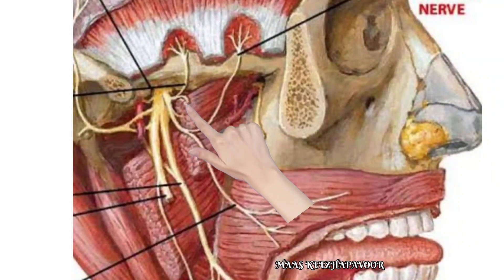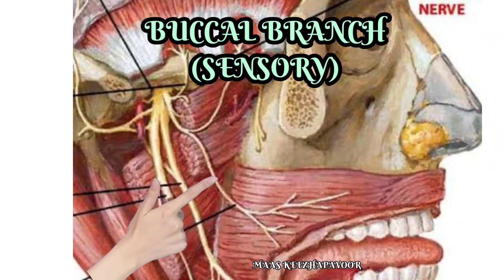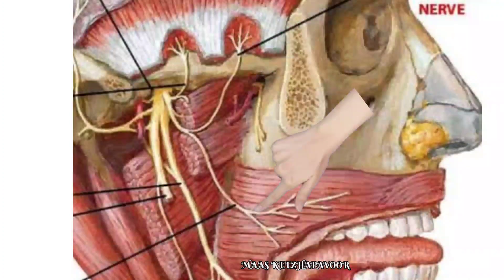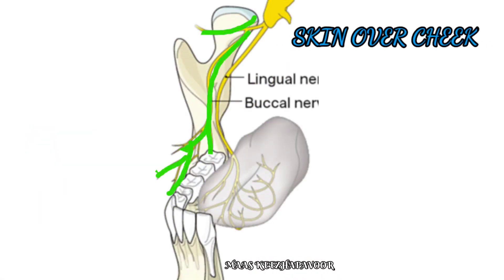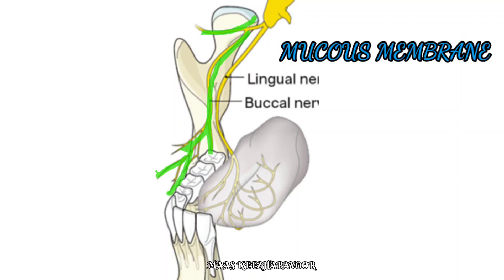The nerve to the lateral pterygoid muscle enters the deep surfaces of both the upper and lower heads of the muscle and supplies it. The buccal branch is the only sensory branch arising from the anterior division of the mandibular nerve. It emerges between the two heads of the lateral pterygoid muscle, then runs downwards and forwards over the buccinator, and gives a branch to the skin over the cheek.